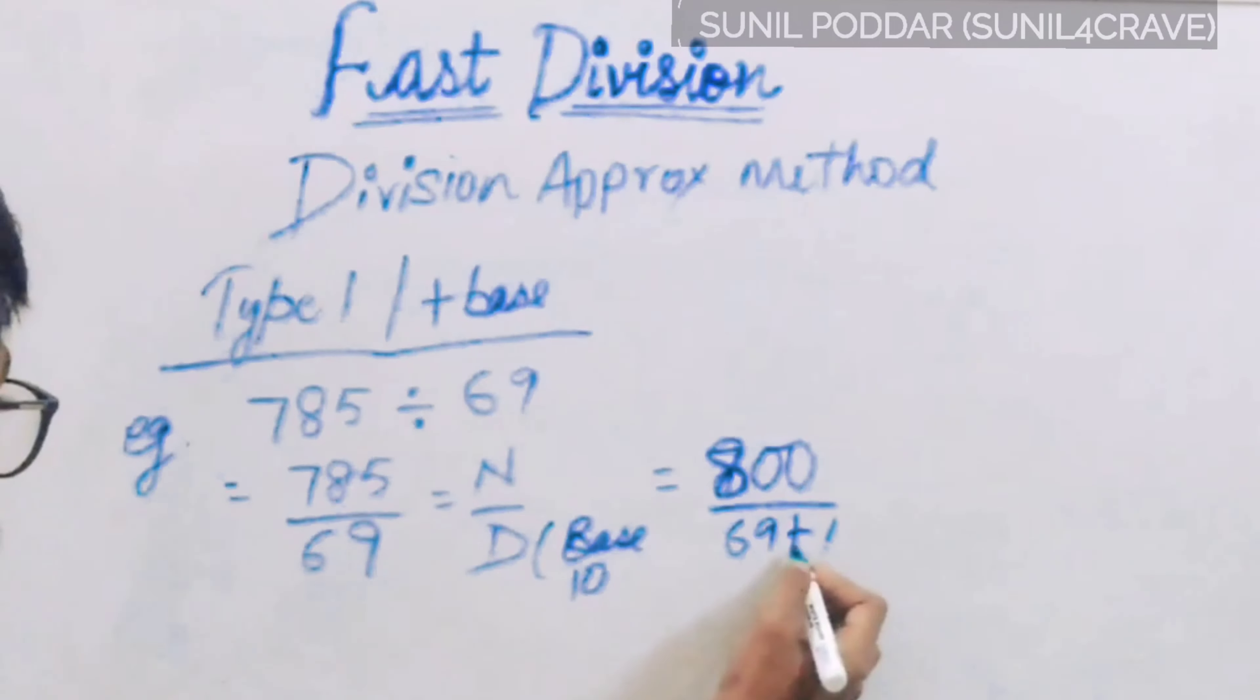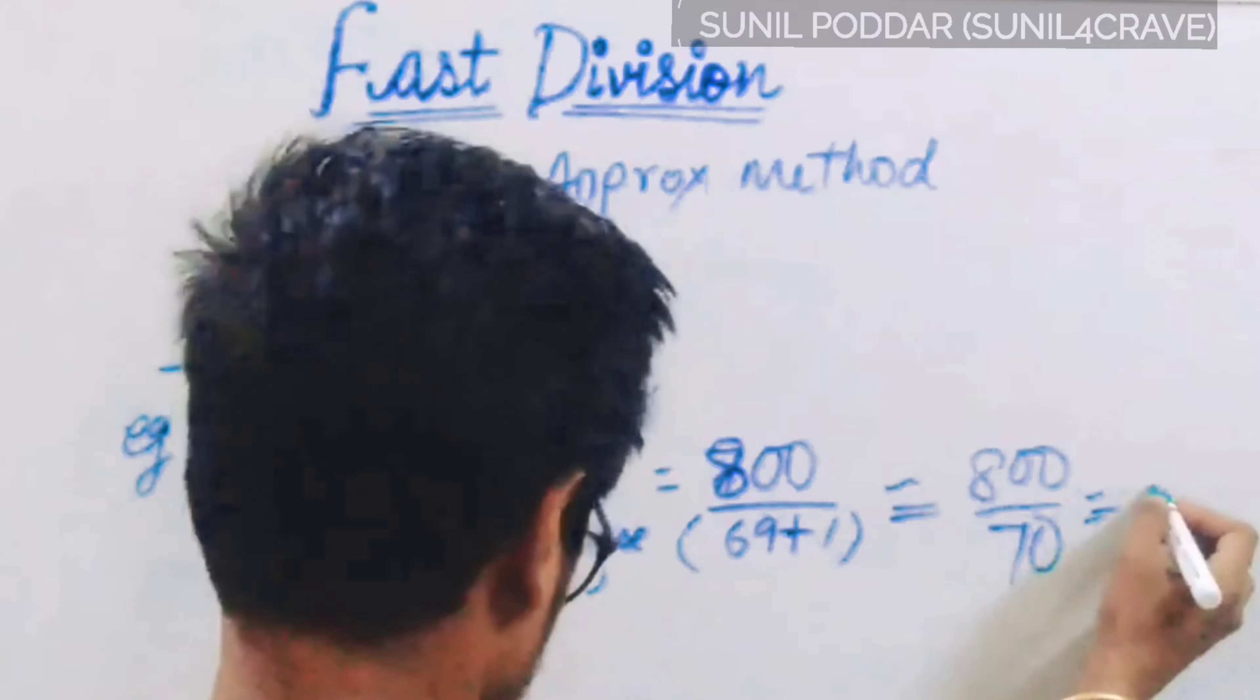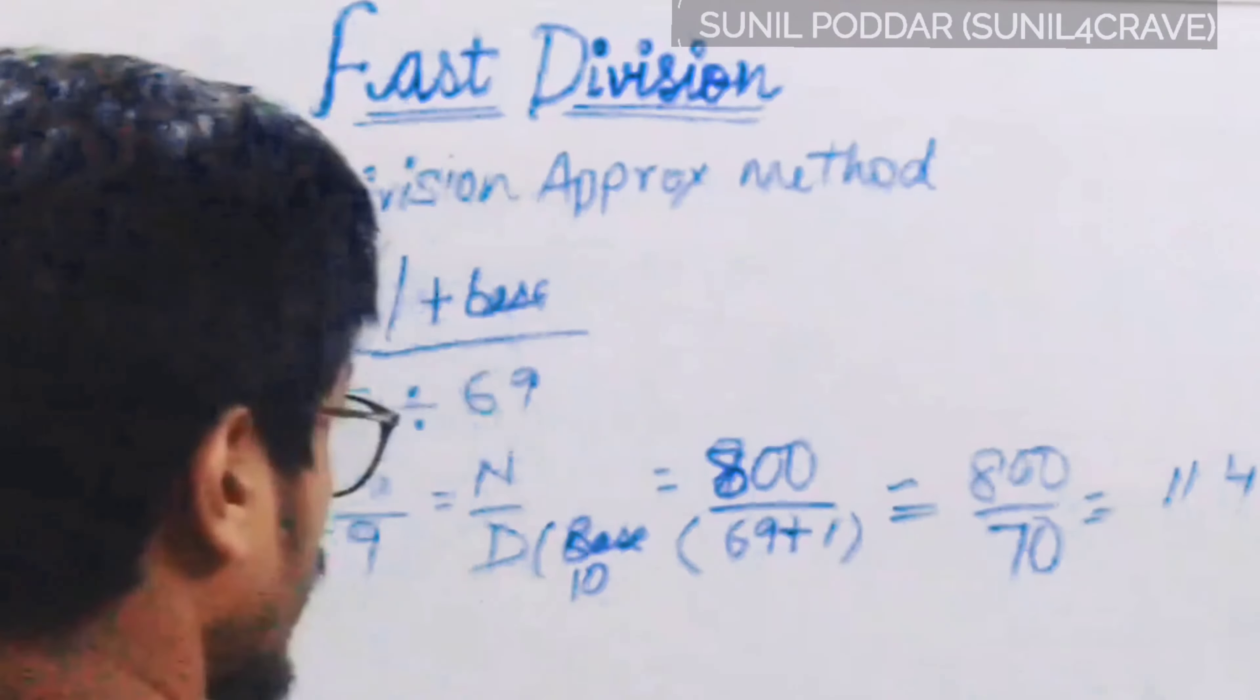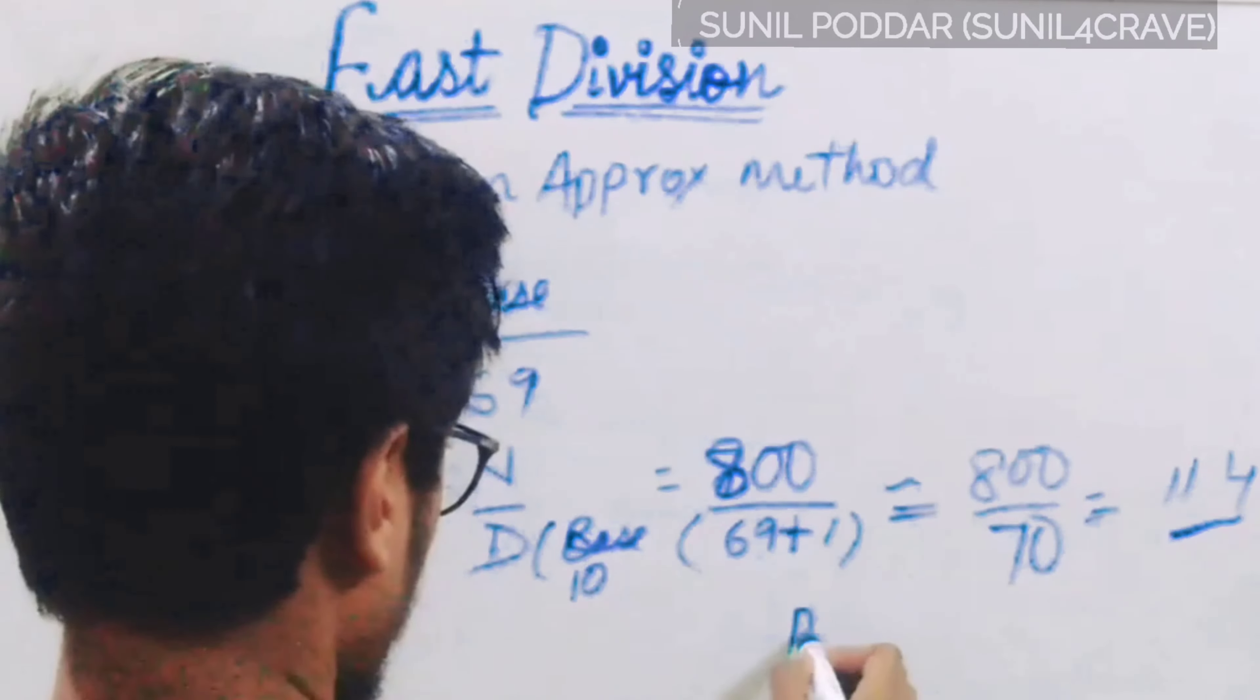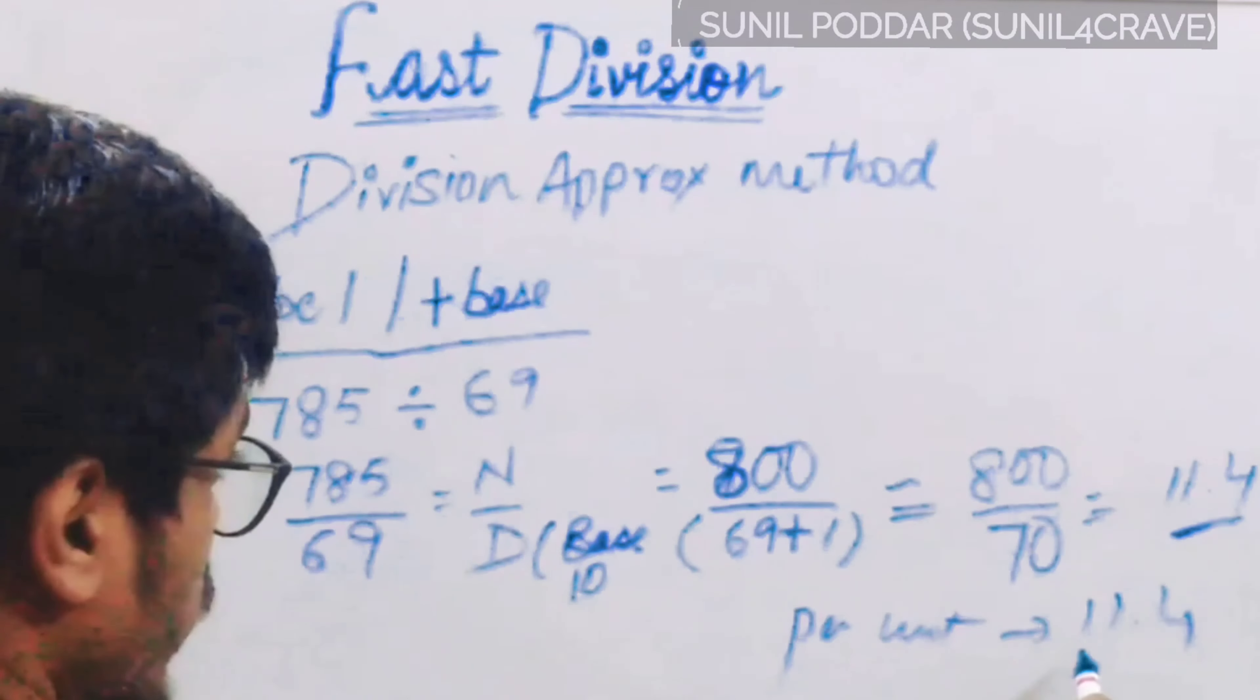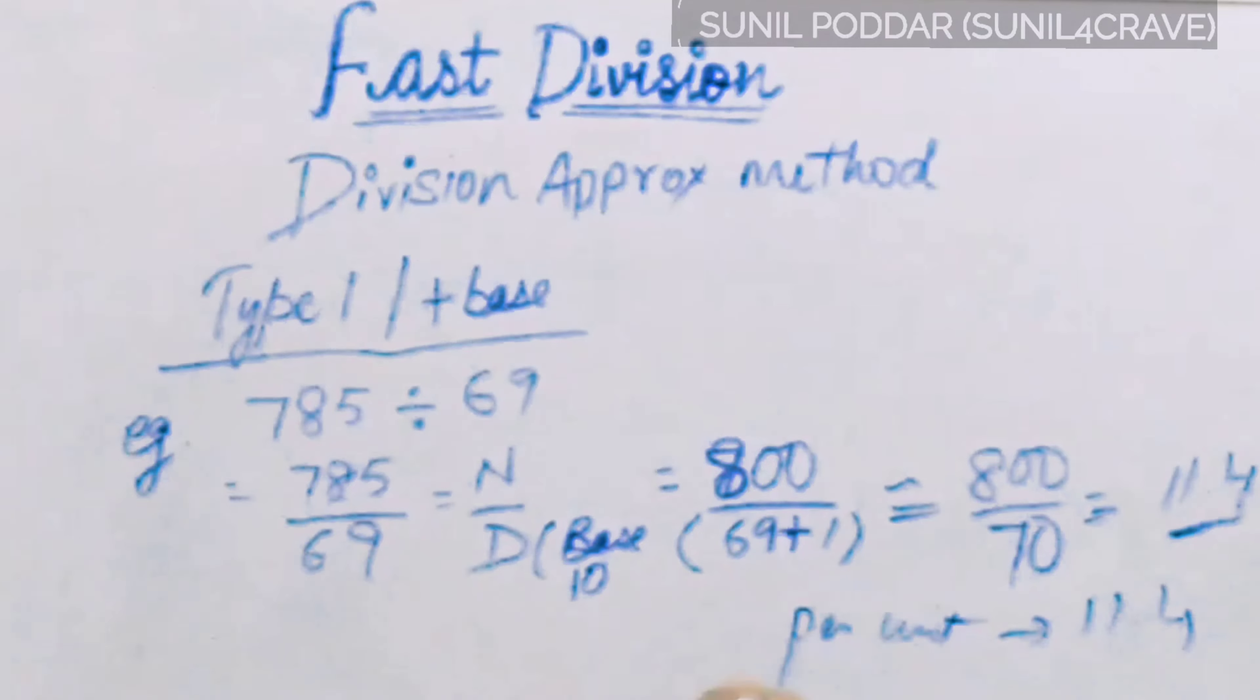So this is the plus one. 800 divided by 70 is 11.4. That is per unit. For one unit, the value is 11.4. This is the nearby figure.